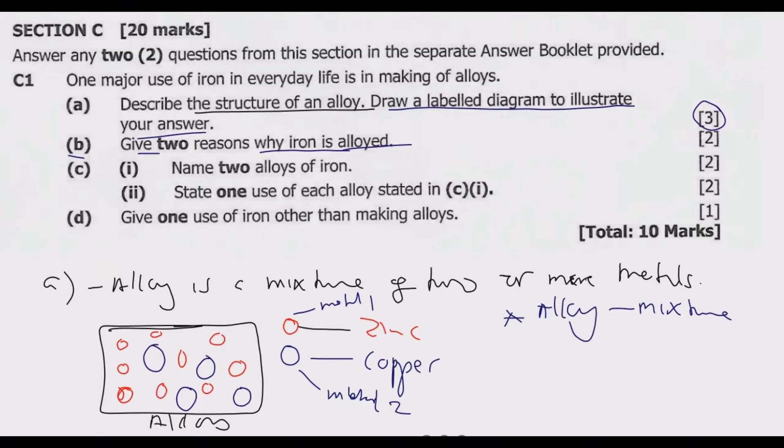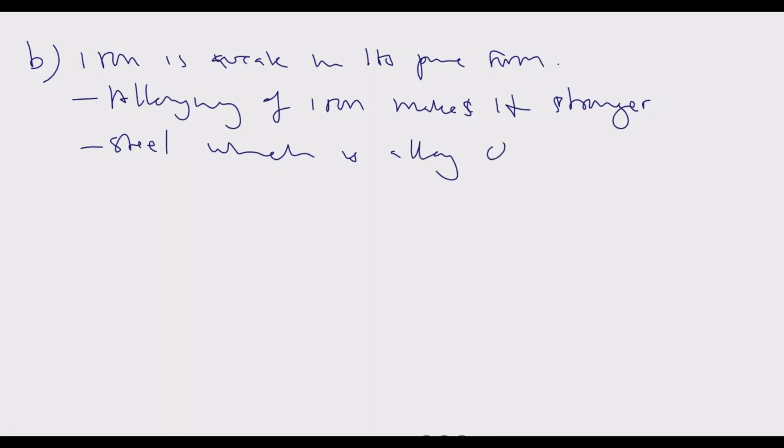So the first one is because iron is a weak metal in its pure form. So iron is weak in its pure form. So because it's weak, when it is alloyed with another element, say with carbon to form steel, it makes a much stronger material, which is used for building. So alloying of iron makes it stronger. The case of steel, which is an alloy of iron and carbon.